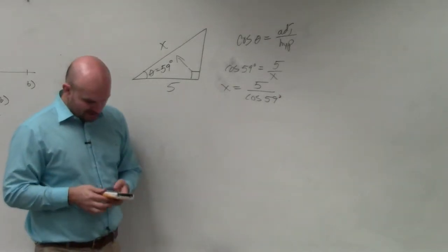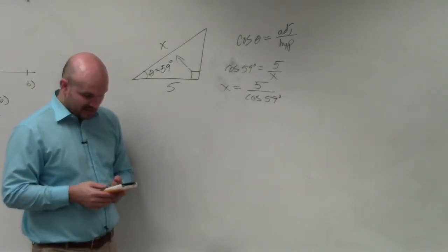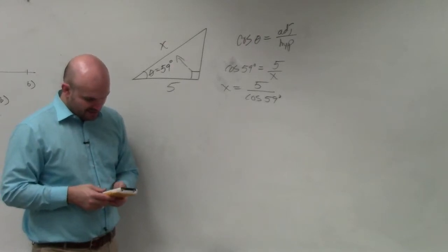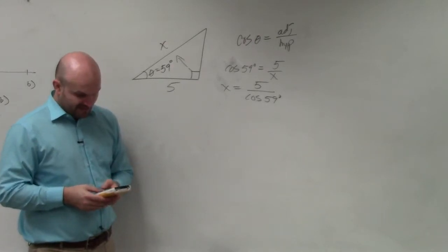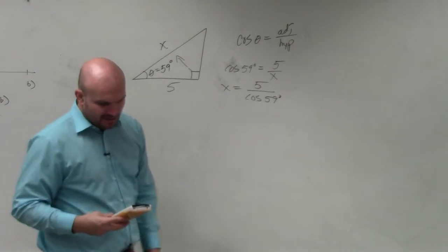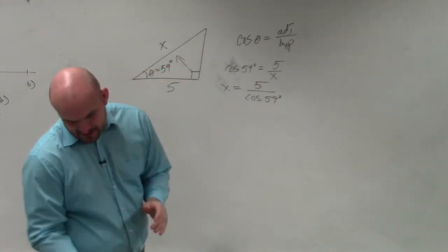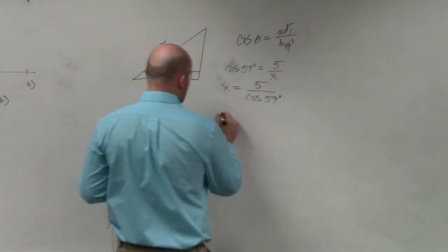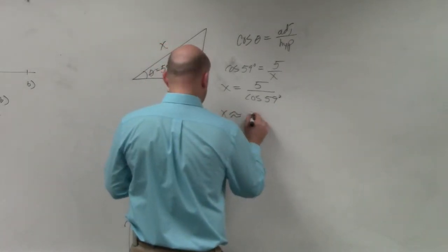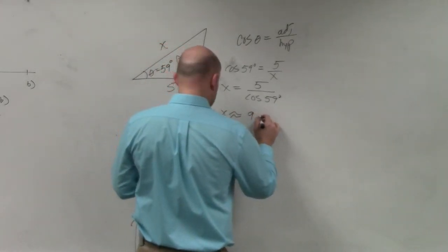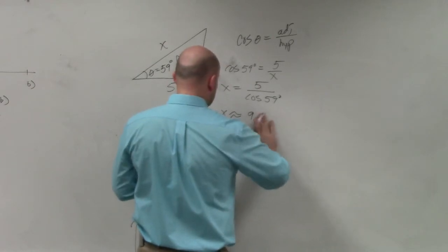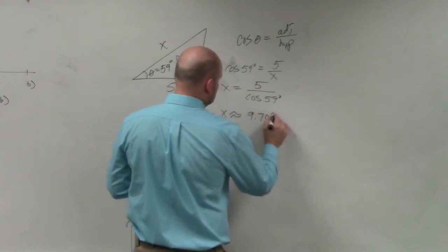Then all we're simply going to do is take 5 divided by the cosine of 59. I'm going to round it to the nearest thousandth. So when I do this, I have x is approximately 9.708.